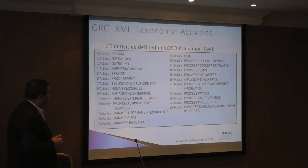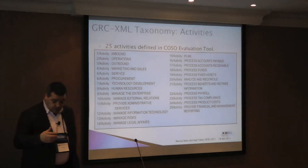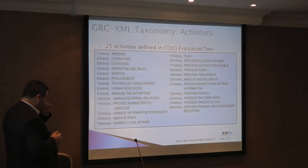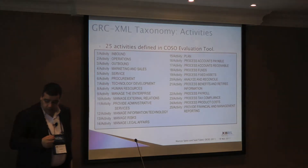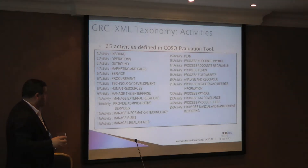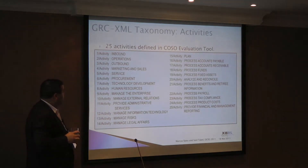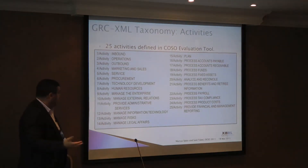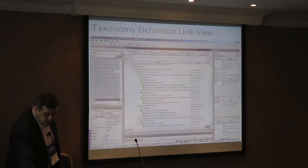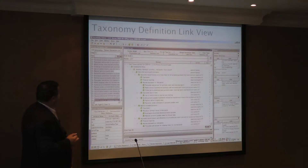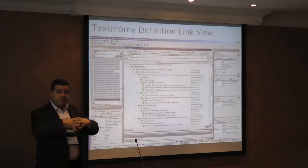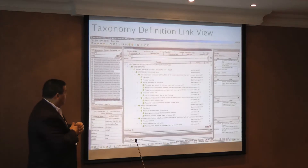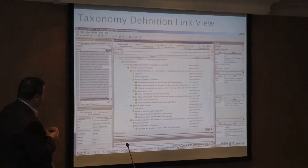We took this into a prototype described in detail in the white paper, using the COSO evaluation tool — about 25 COSO activities represented in the tool we created — to demonstrate the usability of GRC XML. Here are some screenshots: the taxonomy definition link view. Version 1.0 is available for download, so you can look at these things with your tool of choice if you're familiar with XBRL.